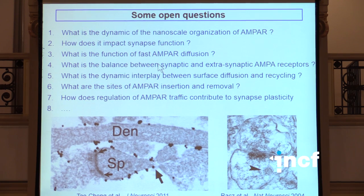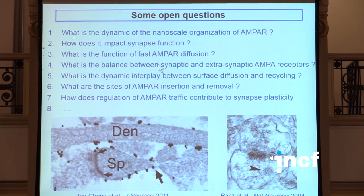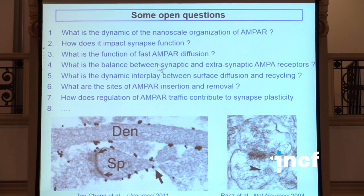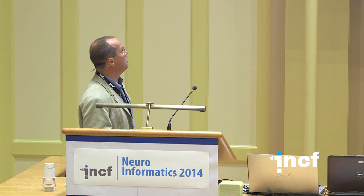Some of the open questions - just to echo what you were saying in your introduction - some of the things that I think are important to look at from a neuroinformatic perspective are: what's the dynamic of this nanoscale organization of receptors? How does it impact synapse function? What's the function of this fast AMPA receptor diffusion? What's the balance between synaptic and extra synaptic receptors? What's the dynamic interplay between surface diffusion and recycling? What are the sites of AMPA receptor insertion or removal? How does regulation of this traffic contribute to synapse plasticity? And really, it's my deep feeling that understanding all these different questions really requires not only new experiments, but also modeling data to actually be able to put all this in an understandable framework.